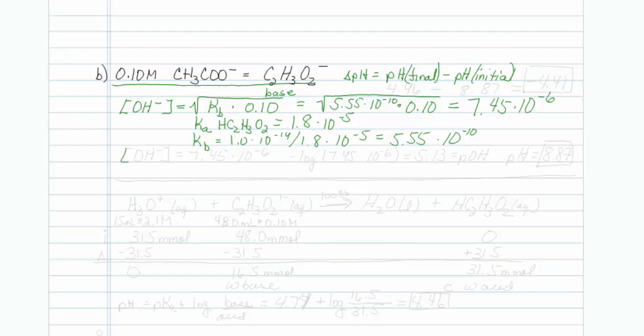Now hopefully you know what to do from here, right? I've got a hydroxide concentration. It's 7.45 times 10 to the minus 6. I think I should take the log of that value. So negative log of 7.45 times 10 to the minus 6 will give me a 5.13, which is equal to my pOH, and that means my pH is equal to 8.87. I have my initial. I will put it up here. It is 8.87.